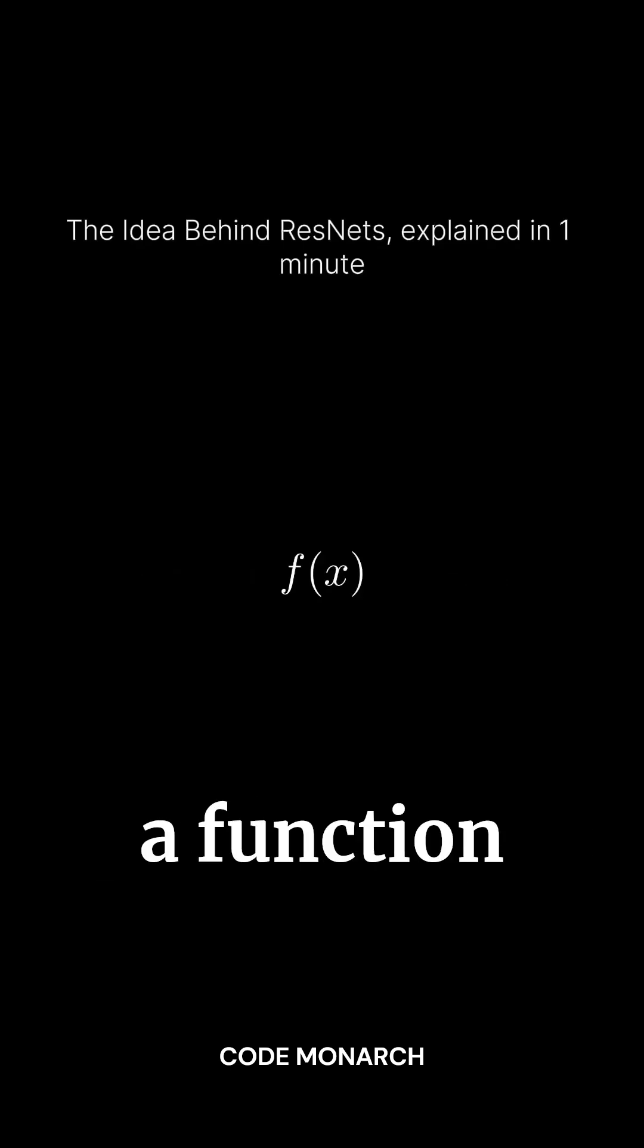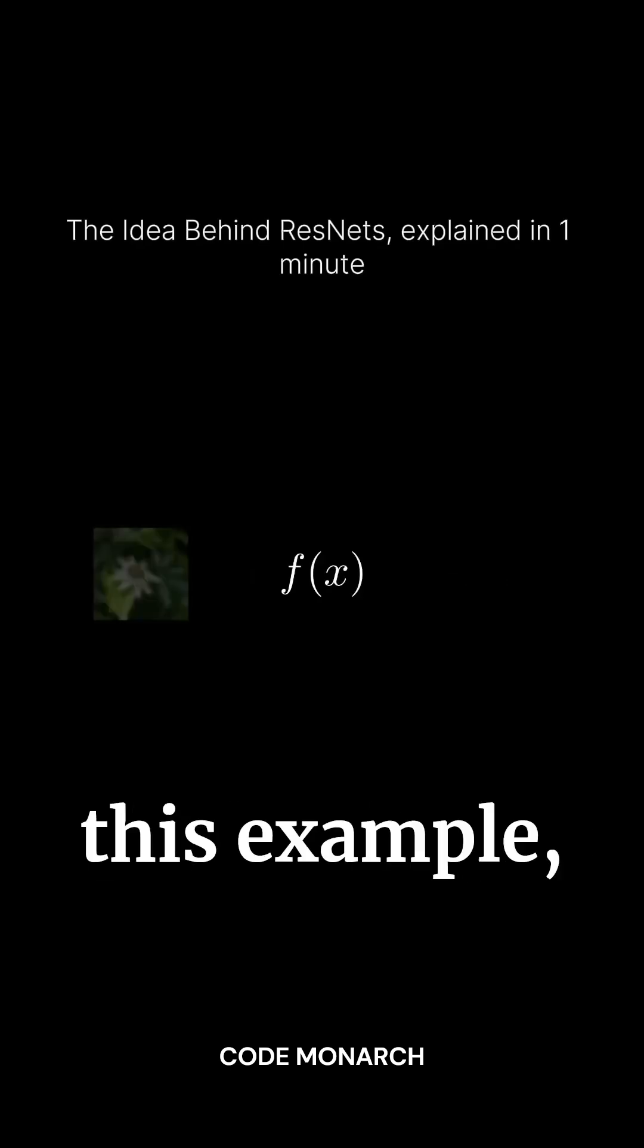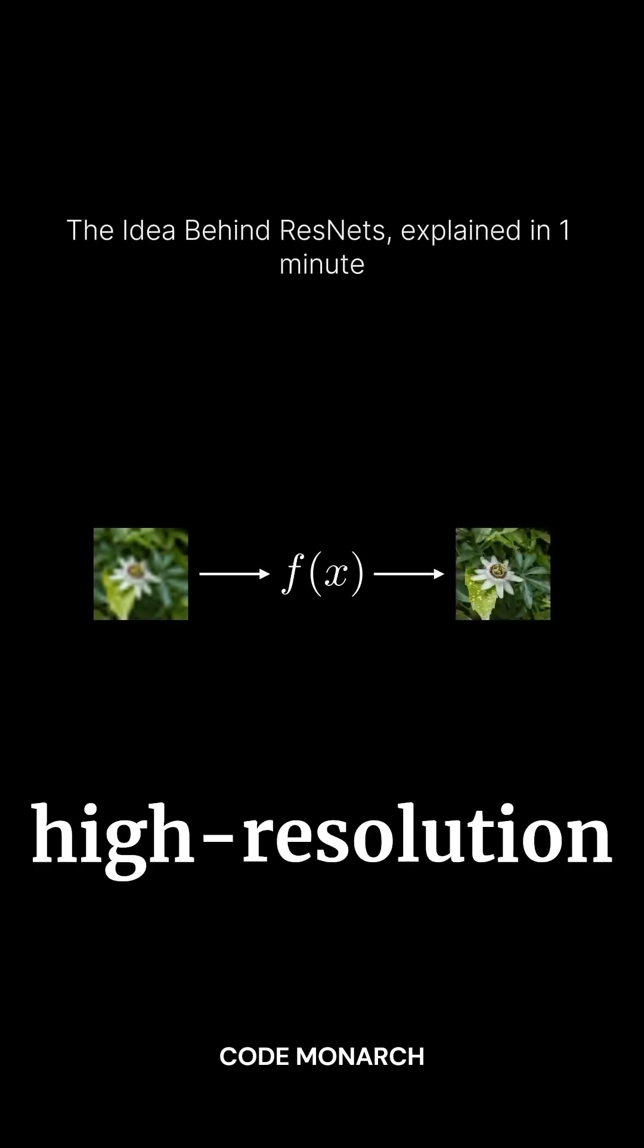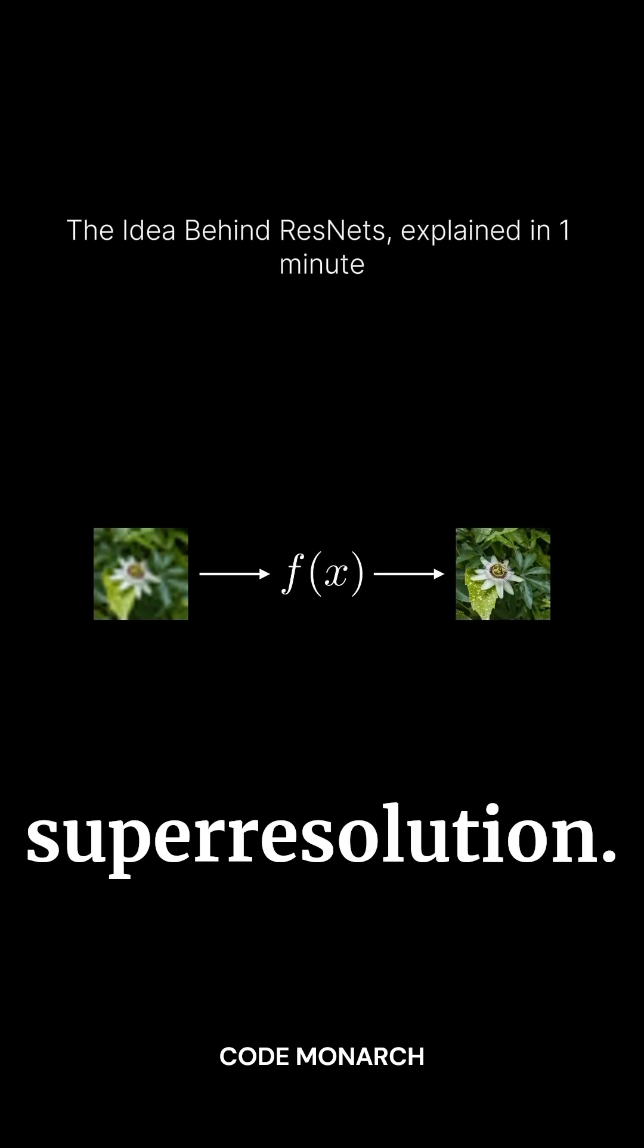Imagine approximating a function with a deep neural network. In this example, we'll pass an upsampled low-resolution image through the network, aiming for a high-resolution output, a process called super-resolution.